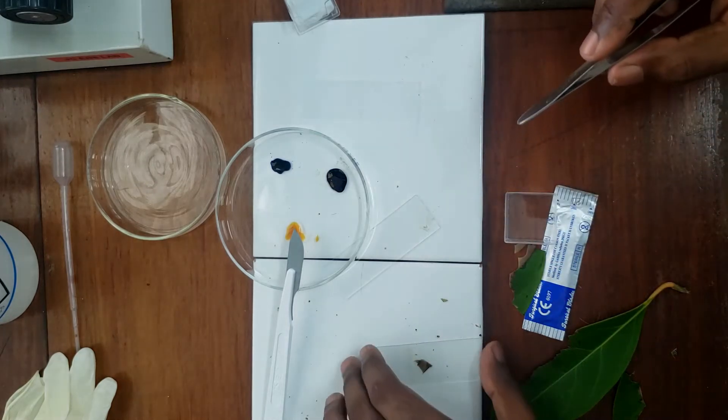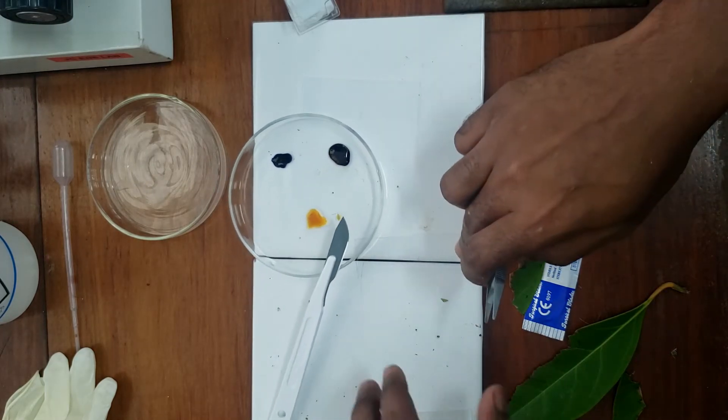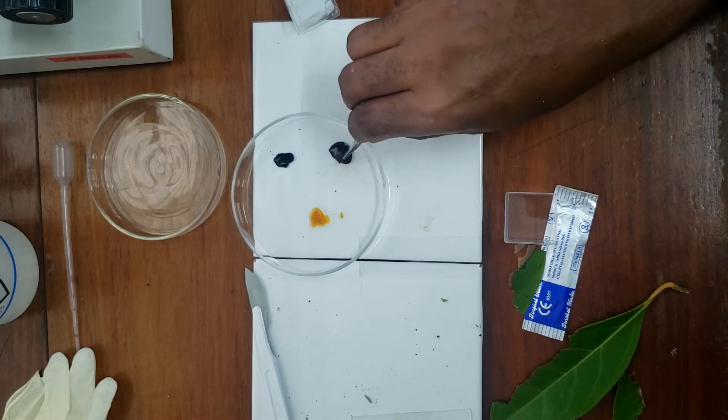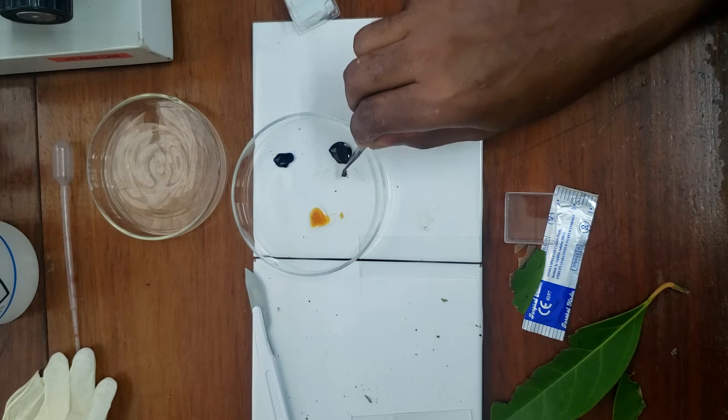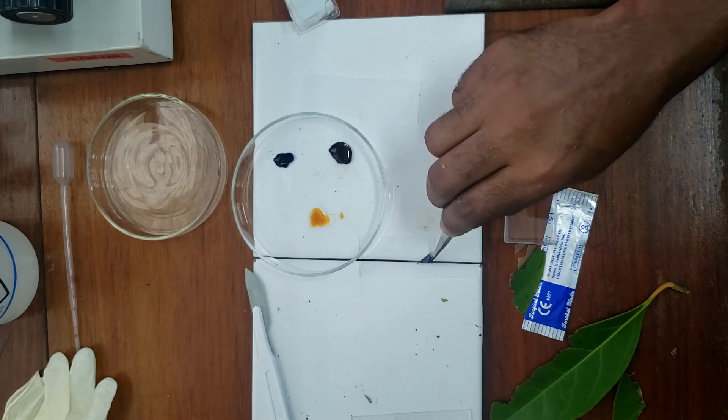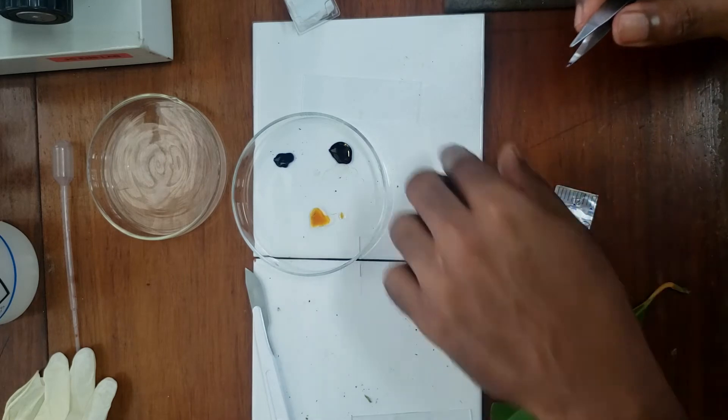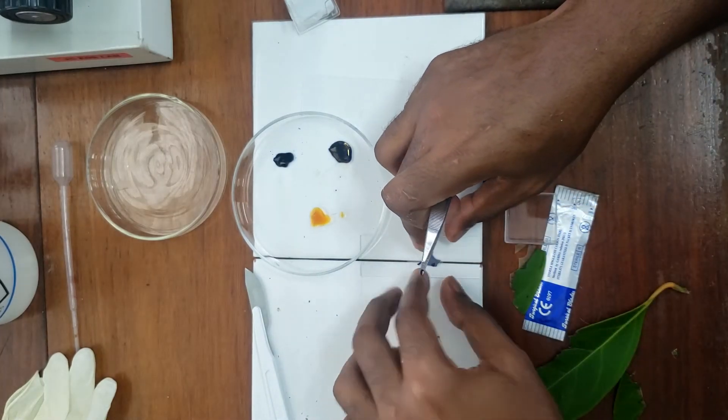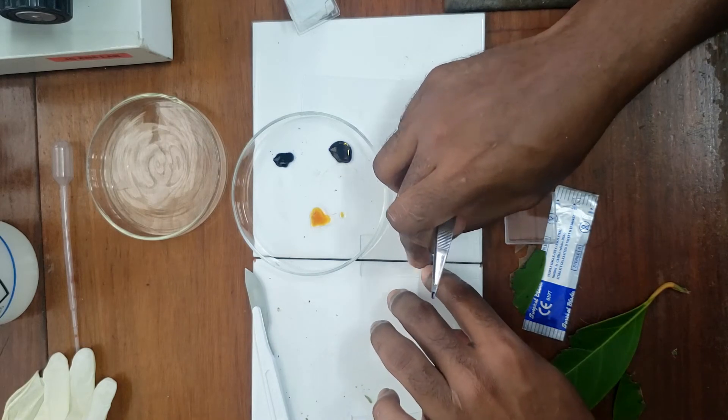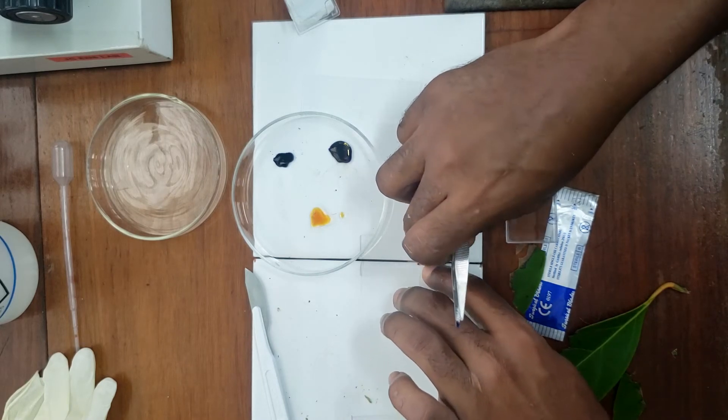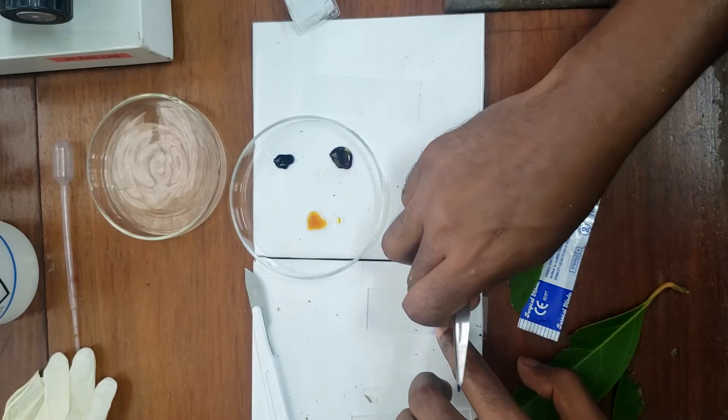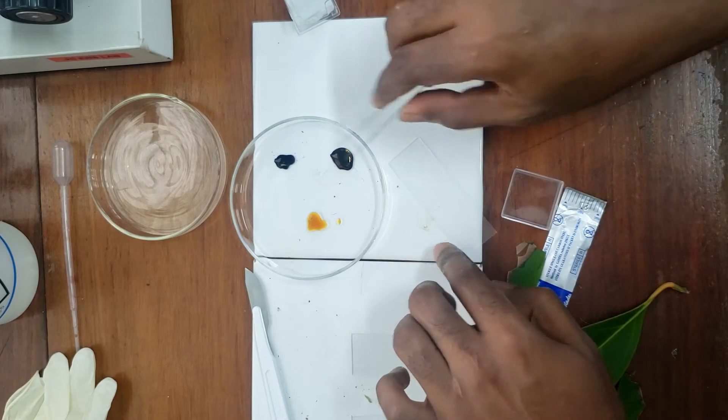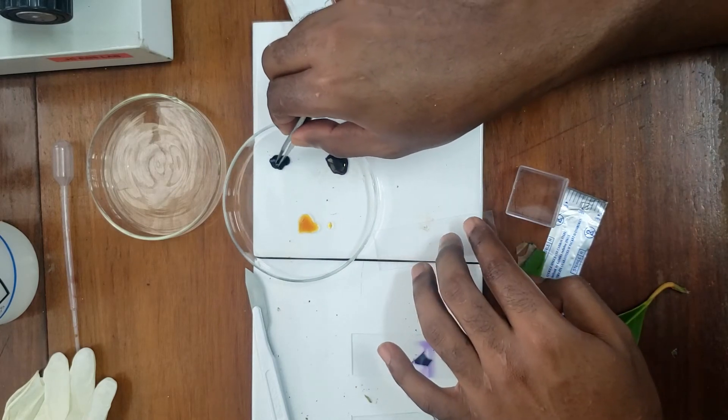Place on the slide. We are going to place a cover slip then gently press down to reduce any air bubbles. And we'll do the same for the other two. So this is the crystal violet, add a cover slip, and then the methylene blue.